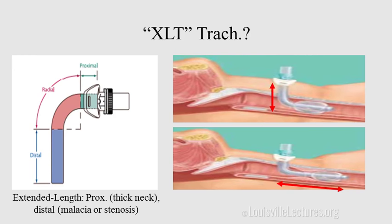You may also encounter XLT, which stands for Extended Length Tube. It comes in two forms: proximal and distal. The proximal XLT is used for patients with a large neck, such as obese individuals, so the proximal portion is longer to reach the trachea. The distal XLT has a longer distal part, used for cases of tracheomalacia or obstruction that needs to be bypassed. When ordering a replacement, know whether it's a regular Shiley or XLT, and if XLT, whether proximal or distal.